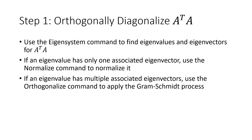Our first step is to orthogonally diagonalize A transpose A. We've talked about how that matrix A transpose A is symmetric and is therefore orthogonally diagonalizable. That means we can find a full basis of eigenvectors for Rn that are orthogonal to each other and are all unit vectors — a so-called orthonormal basis for Rn.